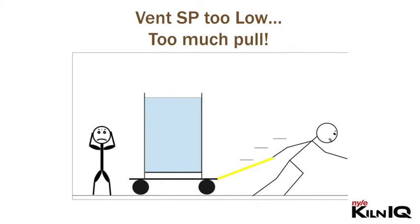So what happens if the vent set point is set too low? It's almost the same as too much dry bulb, but not quite. Excessive venting with good venting capacity will take more moisture from the surface than what is coming out. This forces the evaporation front deeper into the timber, increasing the moisture gradient and drying stresses.